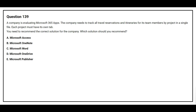Question number 139. A company is evaluating Microsoft 365 apps. The company needs to track all travel reservations and itineraries for its team members by project in a single file, where each project must have its own tab. Which solution should you recommend? Option A: Microsoft Access. Option B: Microsoft OneNote. Option C: Microsoft Word. Option D: Microsoft OneDrive. Option E: Microsoft Publisher. The correct answer is Option B, Microsoft OneNote.